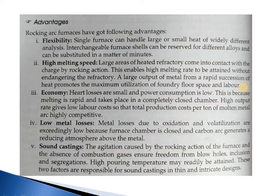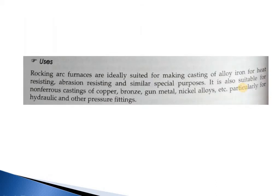Fourthly, no metal losses — metal losses due to oxidation and volatilization are extremely low, because the furnace is closed and the carbon arc generates a reducing atmosphere. Fifth, sound castings — the agitation caused by the rocking action of the furnace and the absence of combustion gases ensure freedom from blowholes, inclusions, and segregations. High pouring temperature can be regulated. These two factors are responsible for sound castings of intricate designs. This is the main point why we use arc furnaces. Users: rocking arc furnaces are ideally suited for making castings of aluminium, brass, and similar special-purpose alloys.